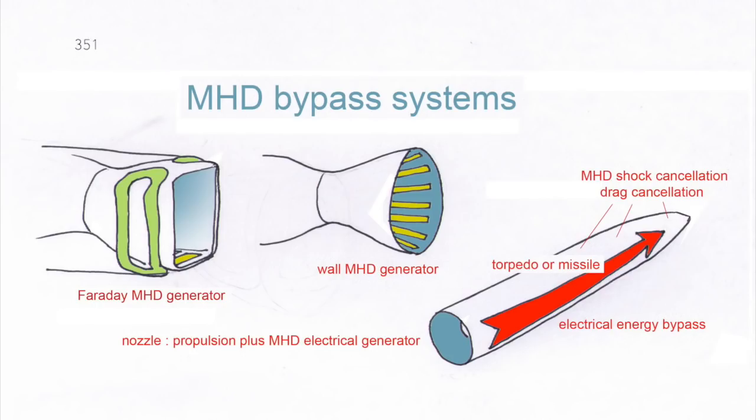Well, for the MHD torpedo and the hypersonic missile, we are going to do the same. In the nozzle, we have a MHD generator, 3D type or wall generator. Remember, the MHD converter are basically reversible. Missiles and torpedo are not designed for a long duration operation, so that we can add in the propellant, caesium, and emit a very high temperature in the nozzle, in order to get enough electrical conductivity.